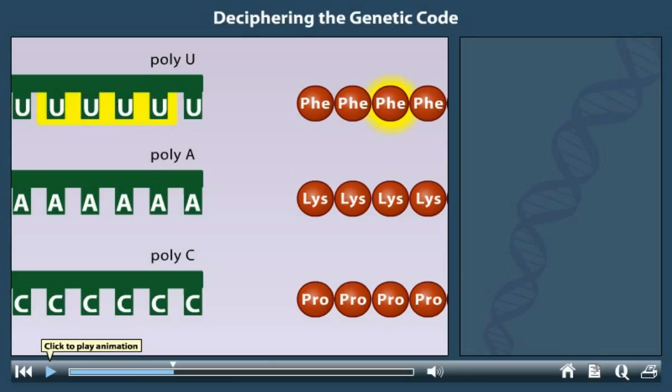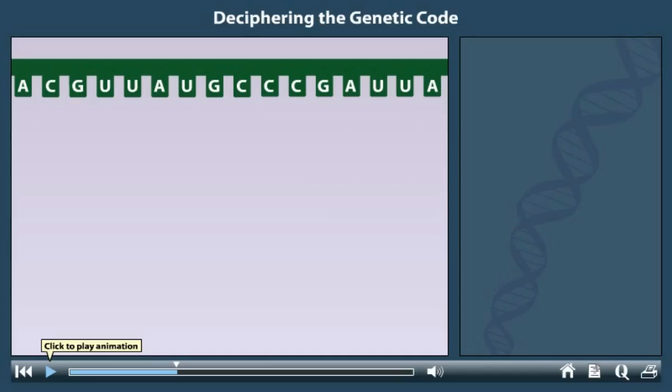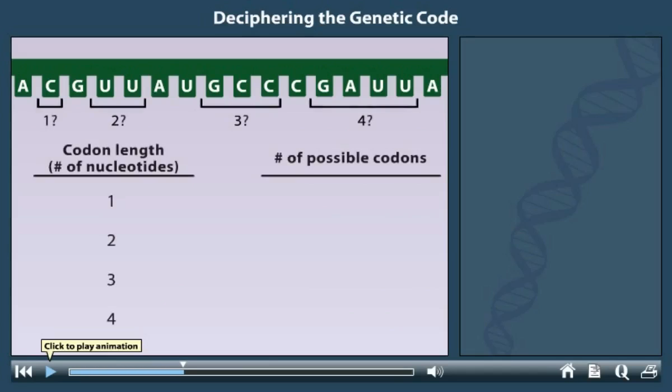Proteins contain twenty different amino acids, while mRNA contains only four different nucleotides. If an mRNA codon is one, two, three, or four nucleotides long, how many different codons can be formed from different arrangements of four nucleotides? Would this be enough to code for twenty different amino acids? Type in your answers, and then press the submit button.